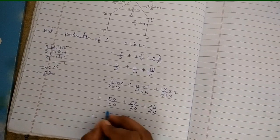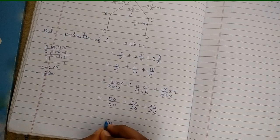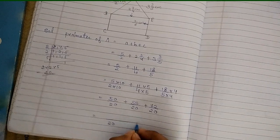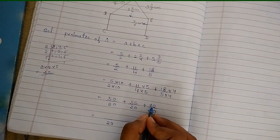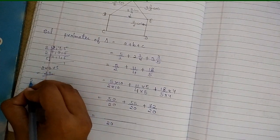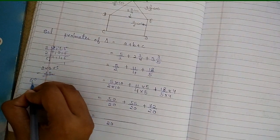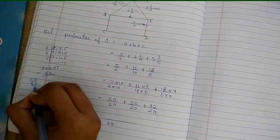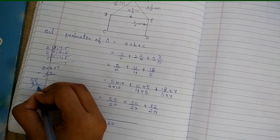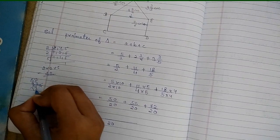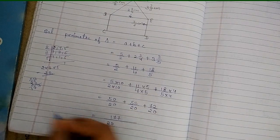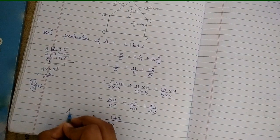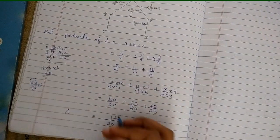We take the common denominator 20. Now we add the numerators: 50 plus 55 plus 72. That gives us 177. So the perimeter of the triangle is 177/20.